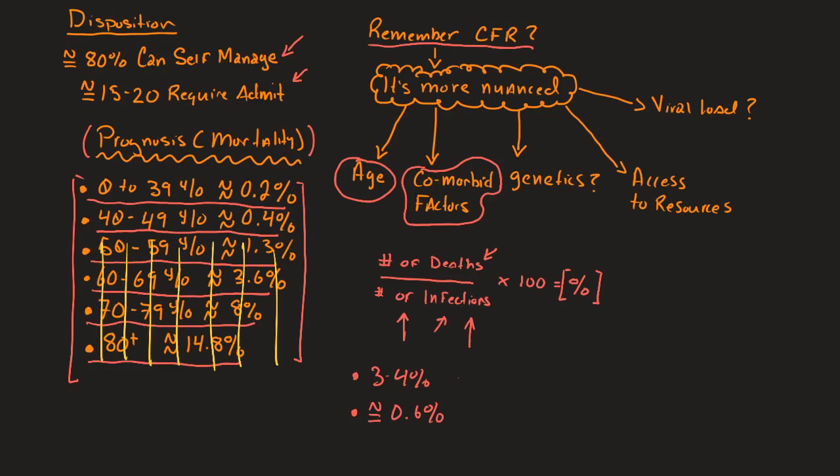Access to resources. If I don't have access to good health care, my individual prognosis is probably going to be lower than someone the same age with the same medical history who has access to better health care. It's just the way it goes.